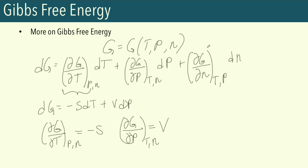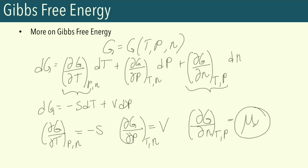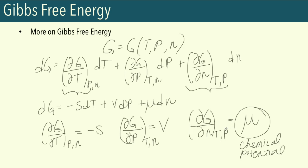What we haven't considered previously is how G changes with the number of moles at constant temperature and pressure. We define this partial derivative — partial of G with respect to N at constant T and P — as mu, our so-called chemical potential. So we can expand the total differential as DG = −SDT + VDP + μDN. Chemical potential is a thermodynamic parameter related to the flow of matter.